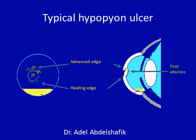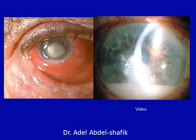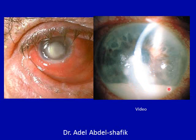At the base of the ulcer, in the deep layers, we get infiltration of the deep layers of the cornea — this is known as a posterior abscess. We also have the hypopyon, which means pus in the anterior chamber. Here you can see an area of ulceration, a small hypopyon, and another example showing ulcer and hypopyon.